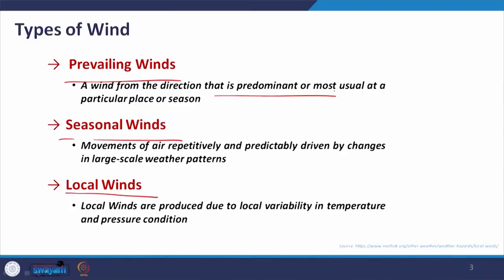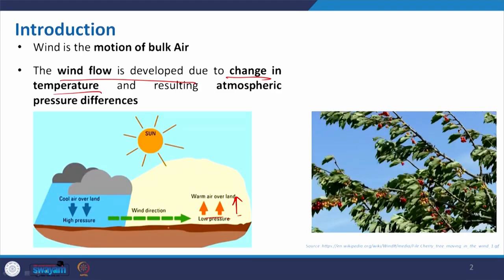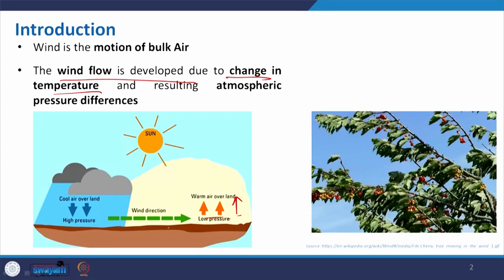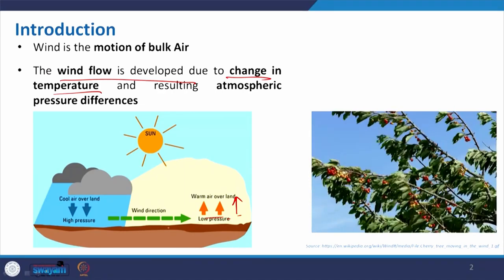Local wind is basically produced due to local variability in temperature and pressure conditions. It is similar to the case where you have a region with a water body and paved surfaces that absorb heat very quickly. The air in contact with that surface gets warm and creates a low pressure zone. This wind is very temporal and very local in nature, blowing from cool regions to hot regions.